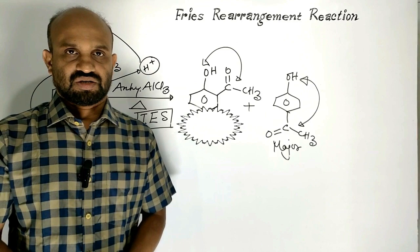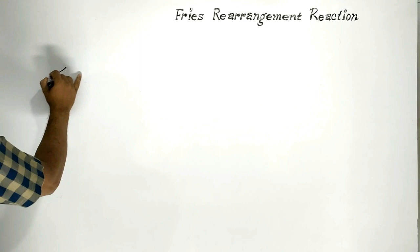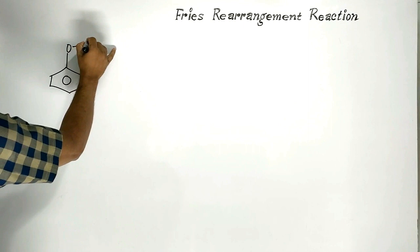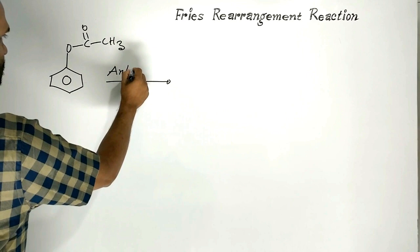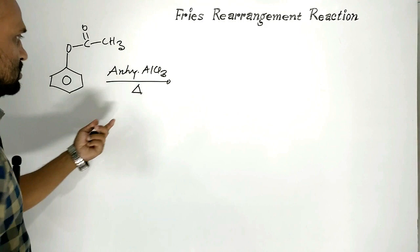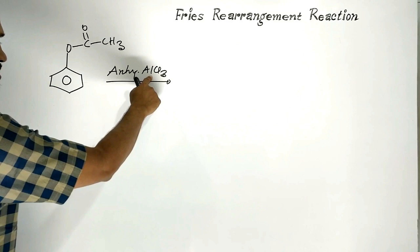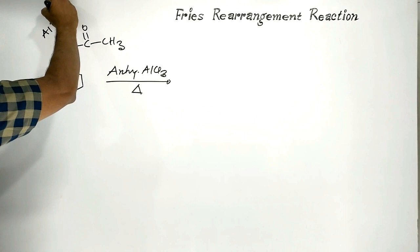Now let us see the probable mechanism of the reaction — mechanism of Fries rearrangement reaction. Phenyl acetate reacts with anhydrous aluminium chloride. On heating, rearrangement proceeds. Anhydrous aluminium chloride is a strong Lewis acid.